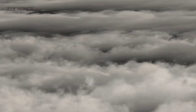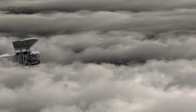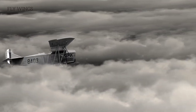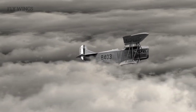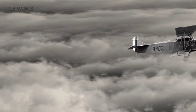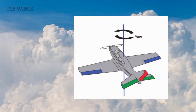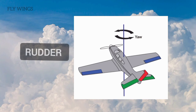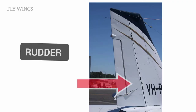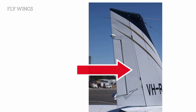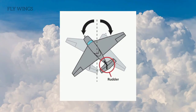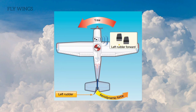The rudder controls movement of the aircraft about its vertical axis; this motion is called yaw. Like the other primary control surfaces, the rudder is a movable surface hinged to a fixed surface — in this case, to the vertical stabilizer or fin. The rudder is controlled by the left and right rudder pedals.